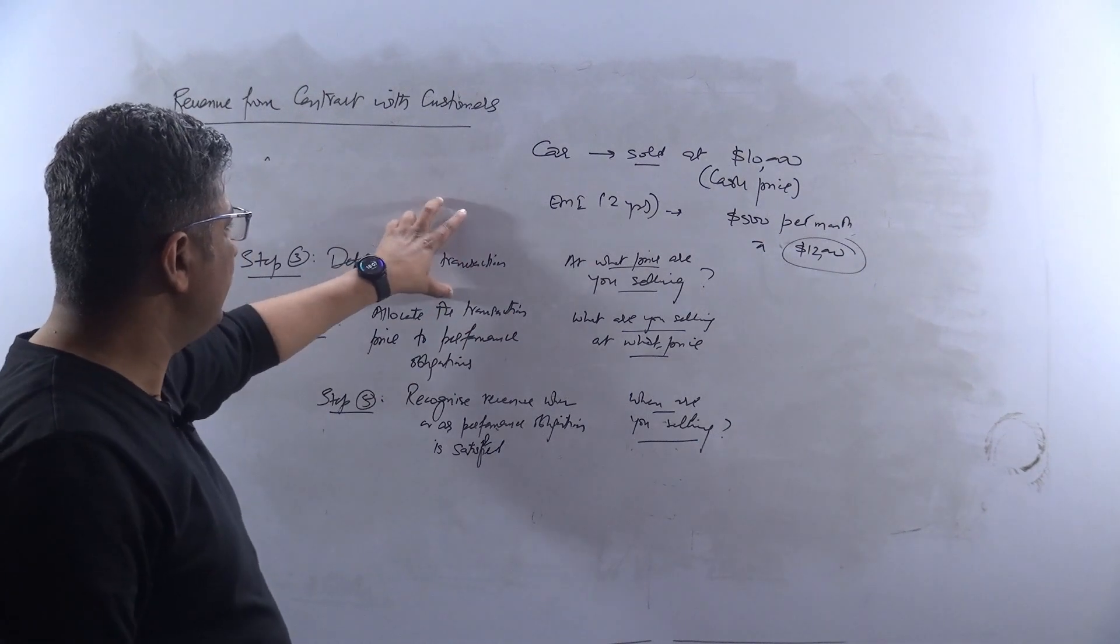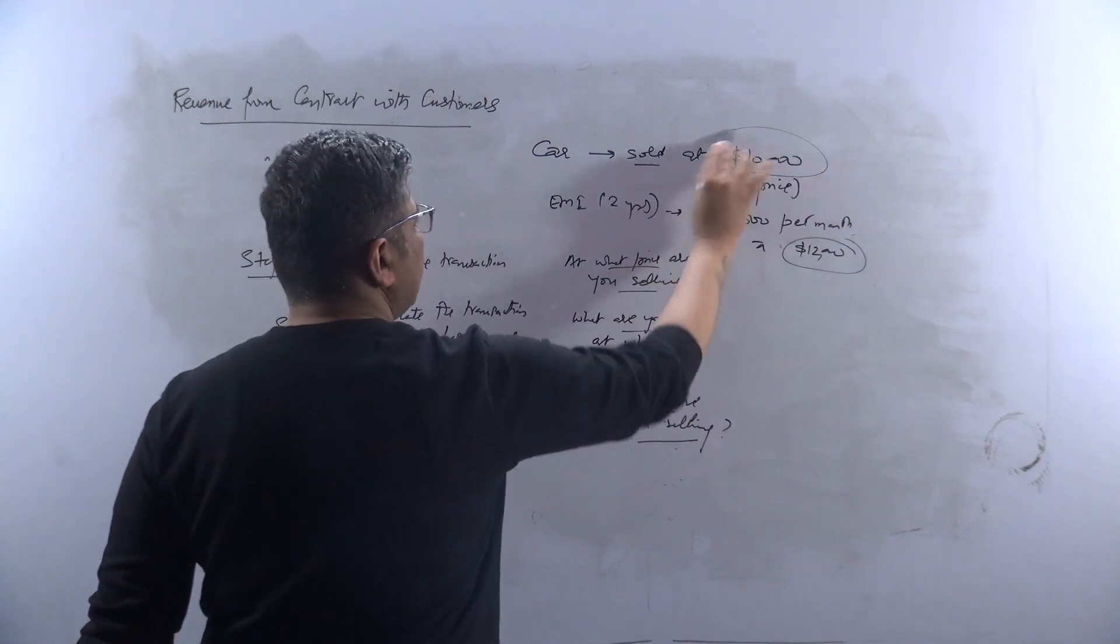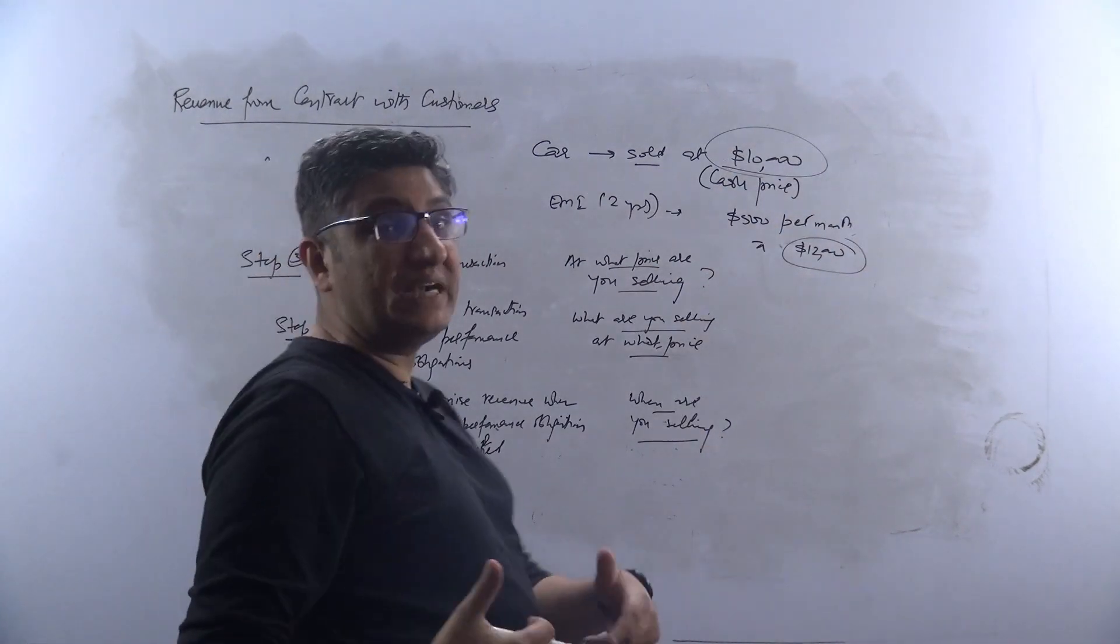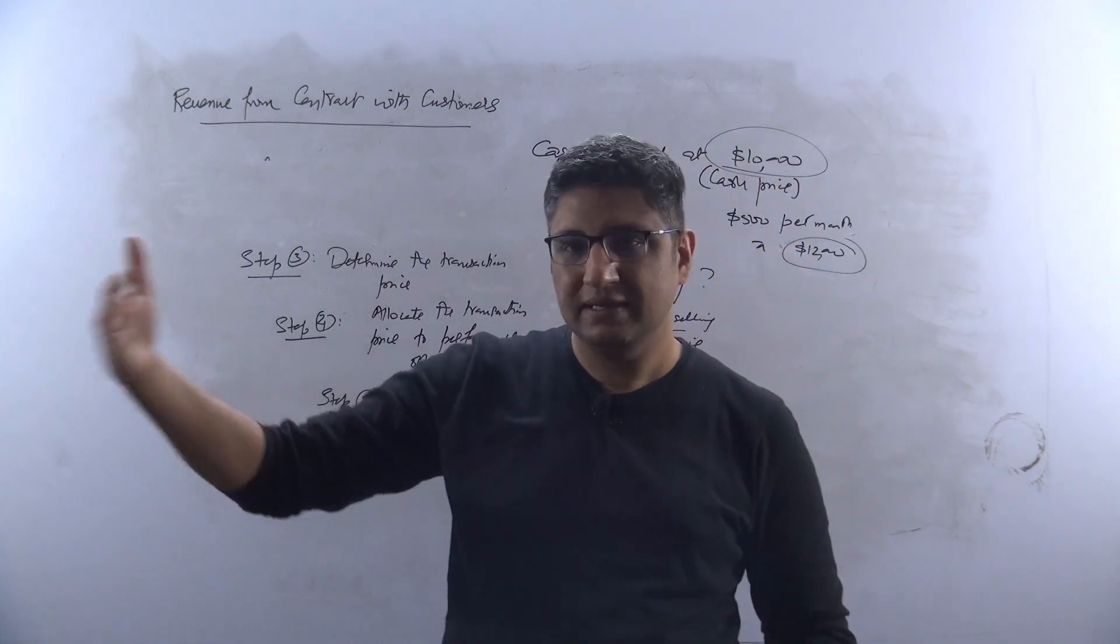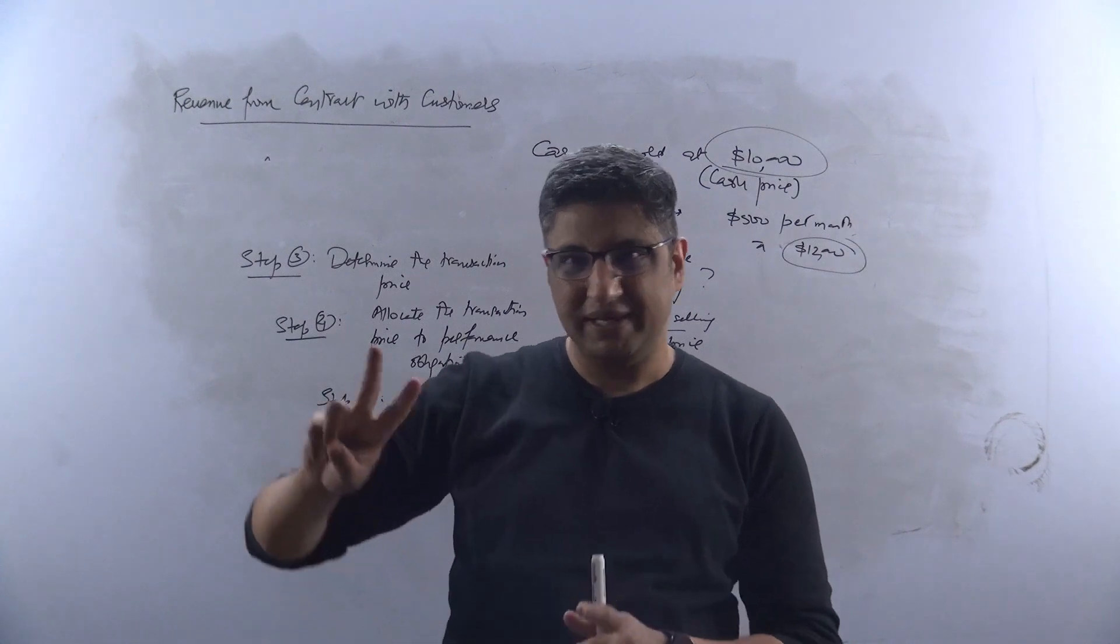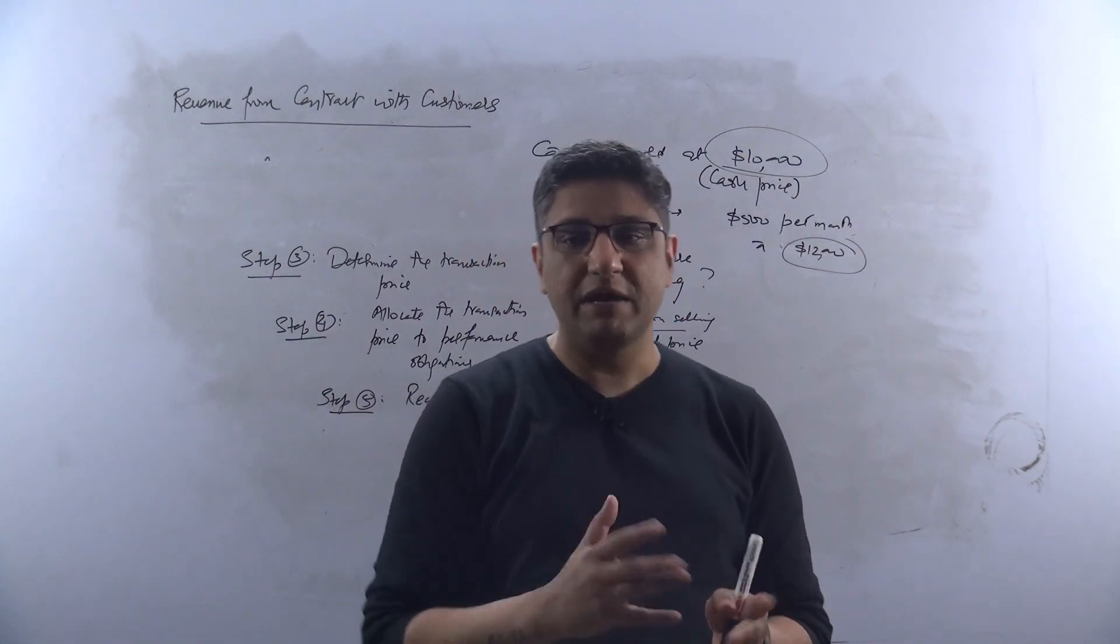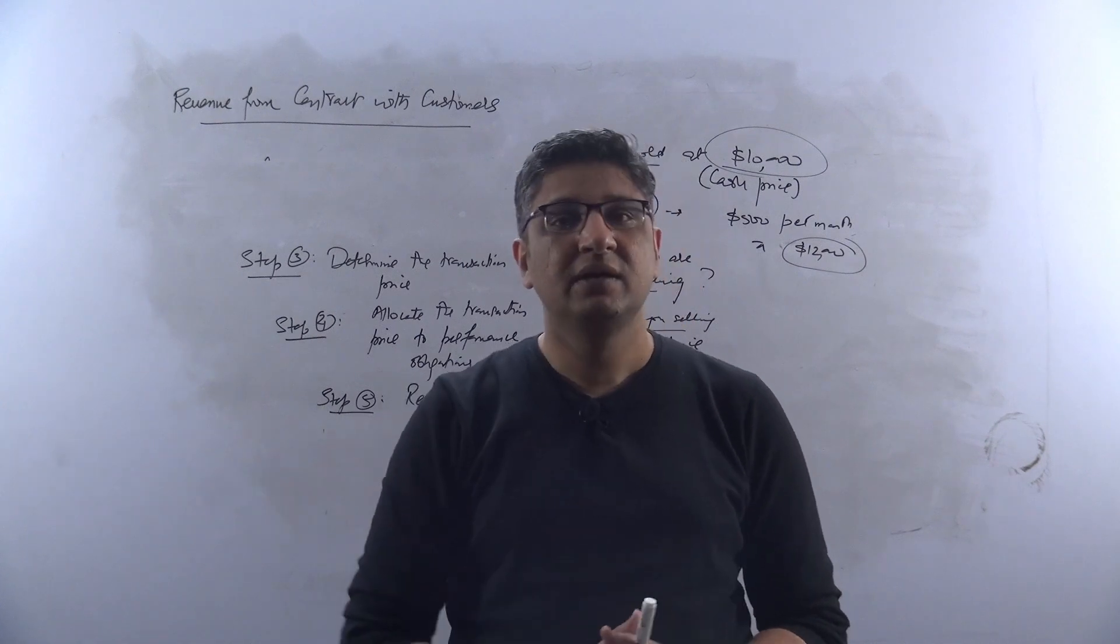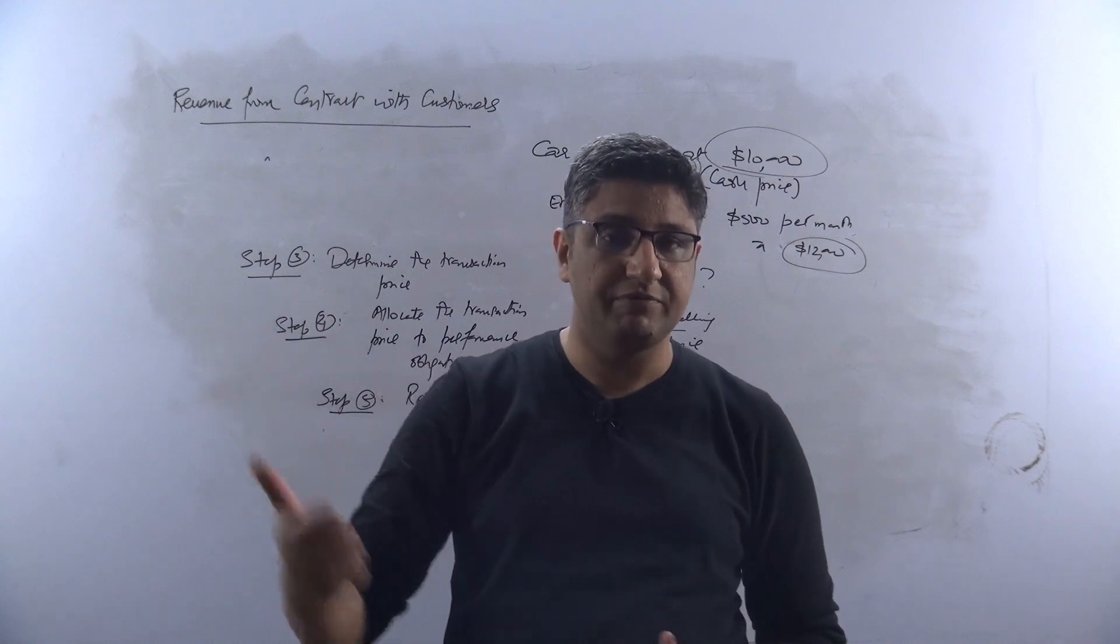So when you say you're determining the transaction price, at what price are you selling? Well, essentially, the car's value is still $10,000. You're making a sale today for $10,000, but it is just the finance component which comes into the picture. You're paying something extra because you're not paying it today.